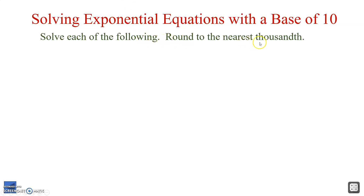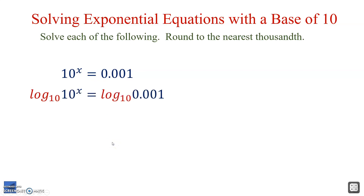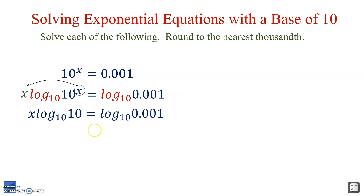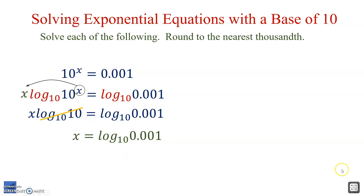We'll solve each of the following and round to the nearest thousandth. First situation: 10 to the x equals 0.001. The base is 10, so we'll log on both sides. The exponent comes out in front based on the power property, leaving us with x times log 10 base 10 equals log 0.001 base 10. Log 10 base 10 cancels, leaving just x equals log 0.001 base 10.